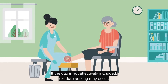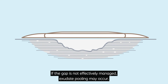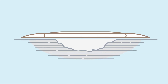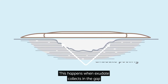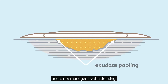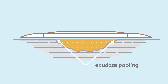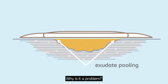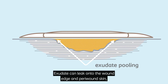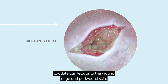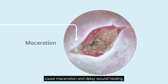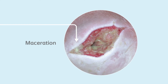If the gap is not effectively managed, exudate pooling may occur. This happens when exudate collects in the gap and is not managed by the dressing. Why is it a problem? Exudate can leak onto the wound edge and peri-wound skin, causing maceration and delaying wound healing.